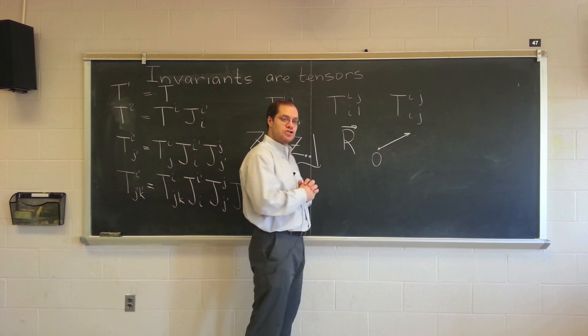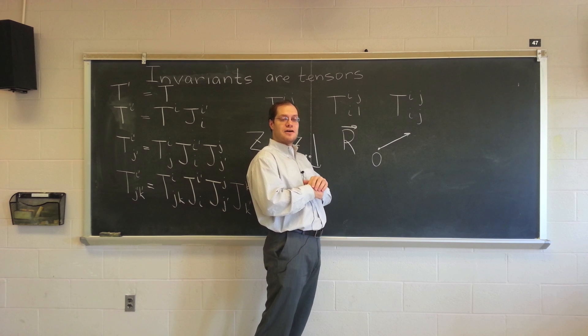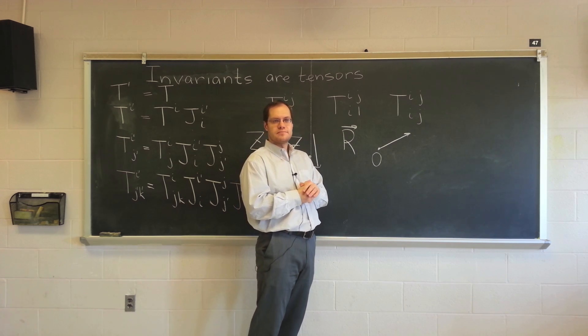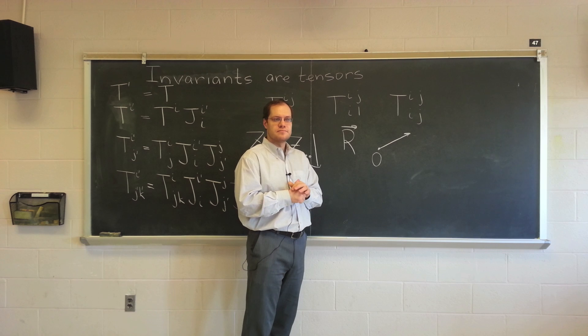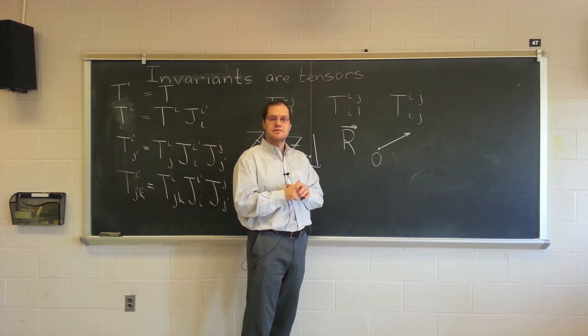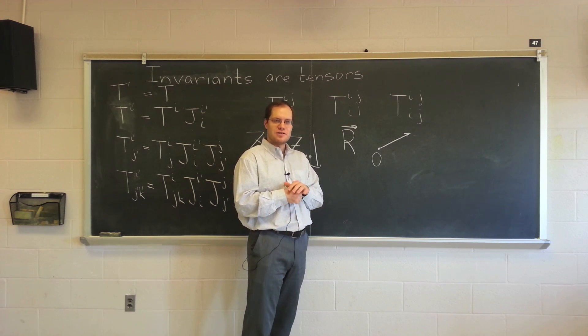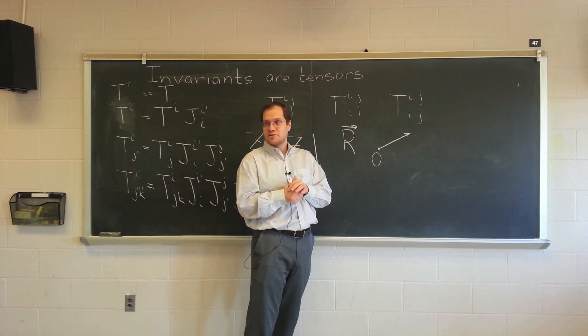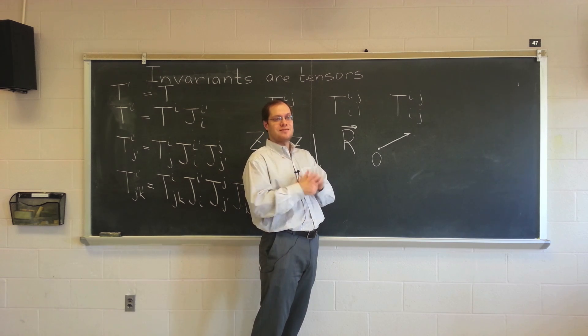Here's another one. How about the determinant of the Kronecker delta? That's an invariant. It's 1 in all coordinate systems. That's a variant of order zero, and it's actually an invariant.